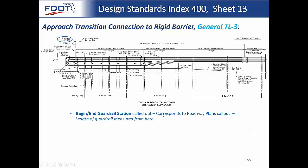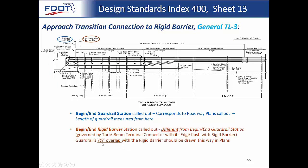Looking at the elevation view, we call out the begin/end guardrail station corresponding to how it's called out in the plans. We also show the begin/end rigid barrier station so you can clearly see they're different. Note the 7-and-a-quarter-inch overlap. In the past with Detail J there was a much larger overlap — about 12 foot 6 inches more. That overlap has gotten much smaller, but it's still there, so when calling out the beginning of guardrail you must account for this in the stationing.